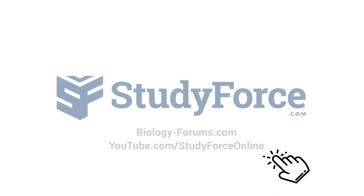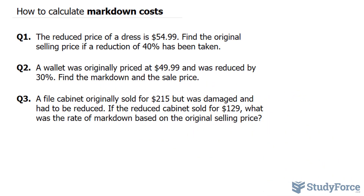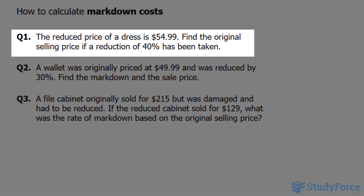In this lesson, I'll show you how to calculate markdown costs. Question 1 reads: the reduced price of a dress is $54.99. Find the original selling price if a reduction of 40% has been taken.